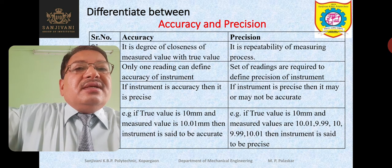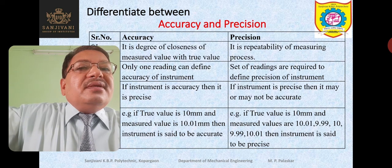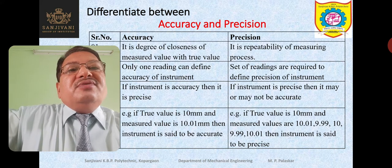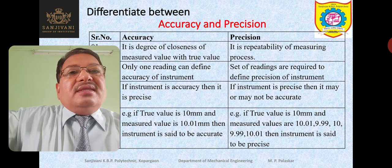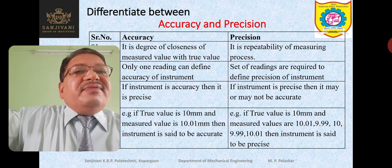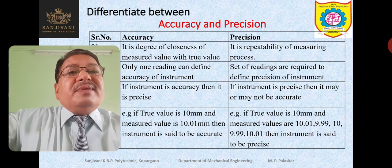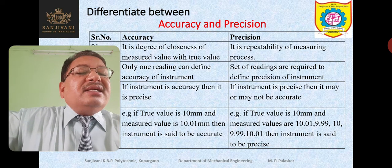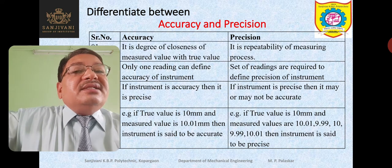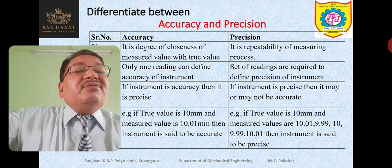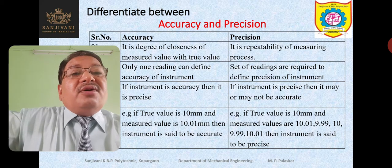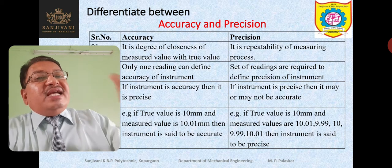If an instrument is accurate, then it is precise. But if an instrument is precise, then it may or may not be accurate. An accurate instrument will definitely give precise readings with no or very less variation. But it is not necessary that if the instrument is giving precise readings, it is accurate — all readings given by the instrument may be wrong. The instrument may be precise but not accurate. But if the instrument is accurate, definitely it is precise.